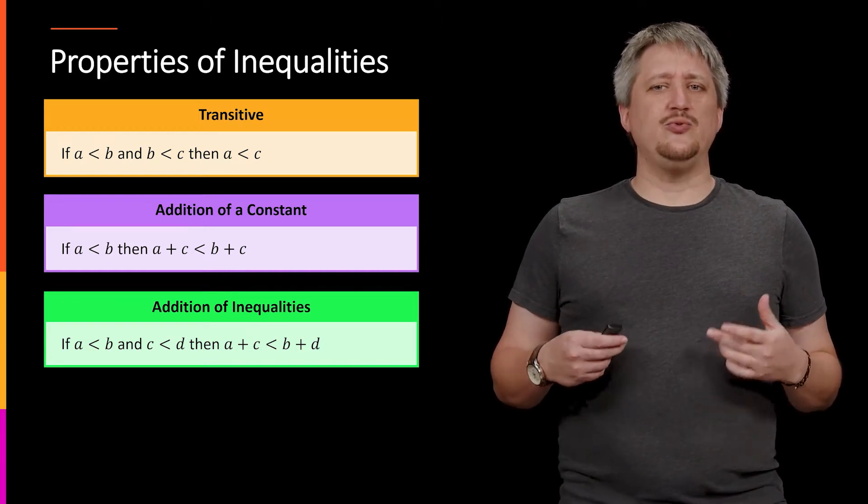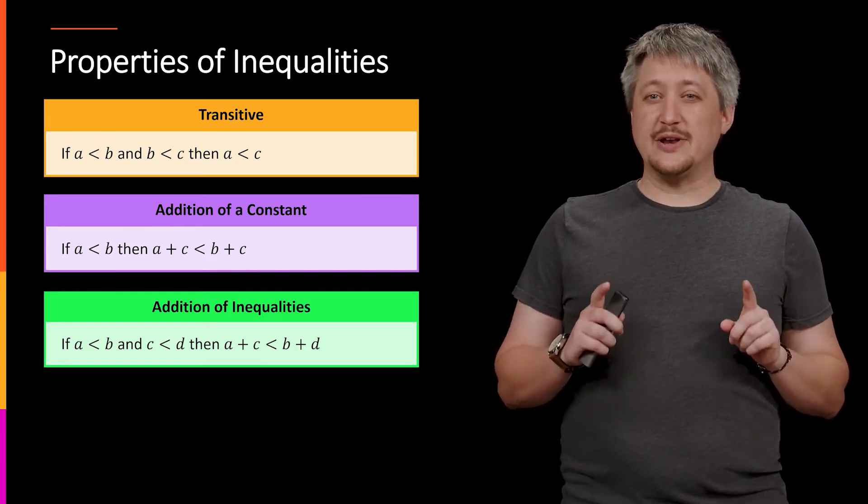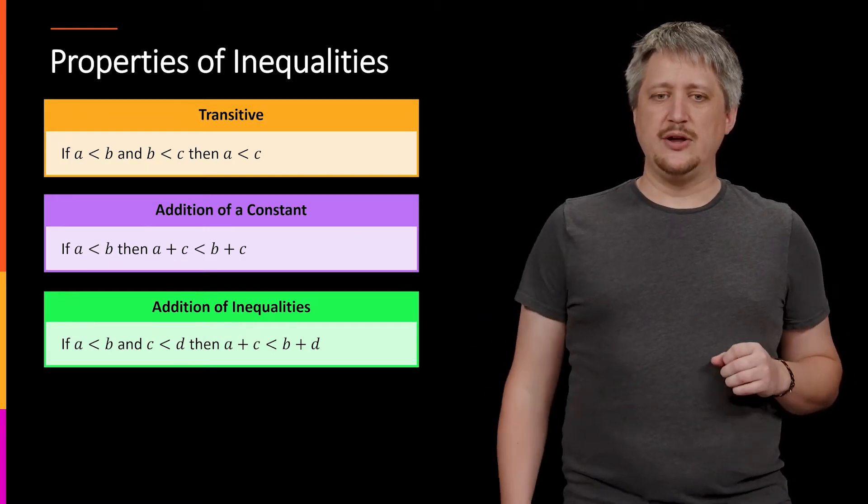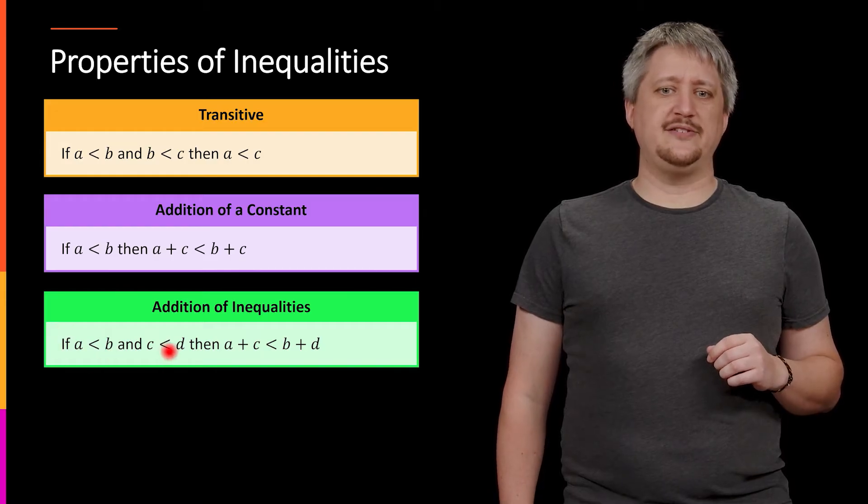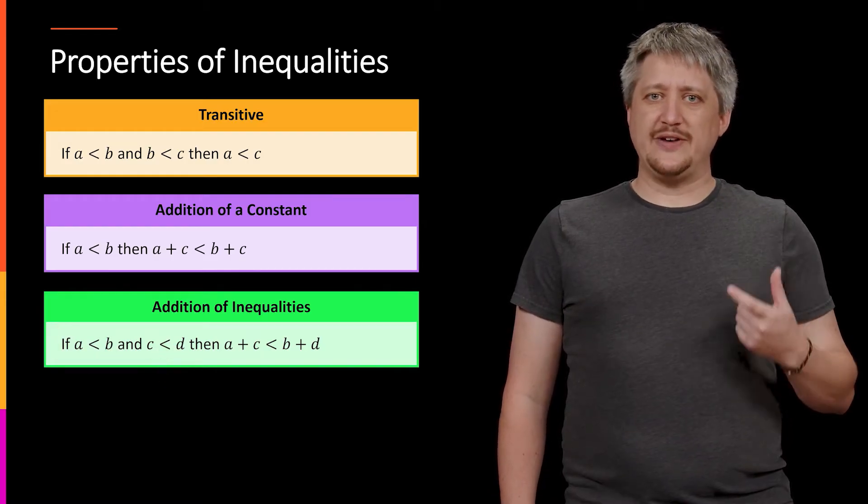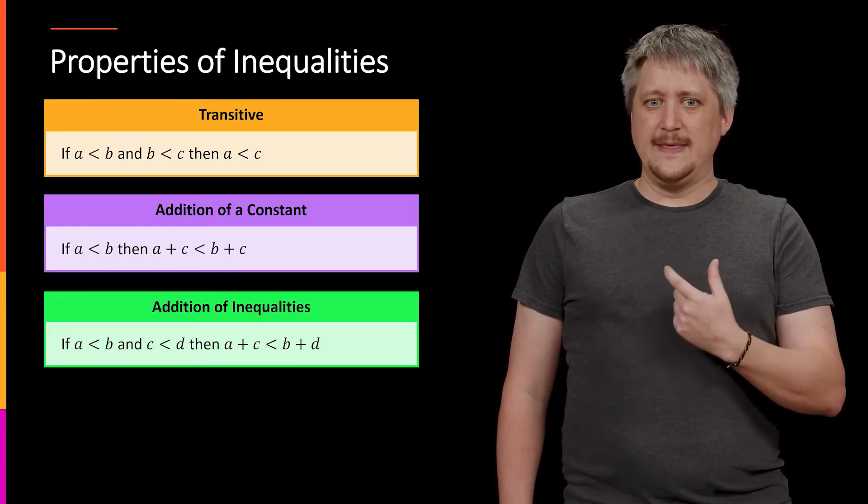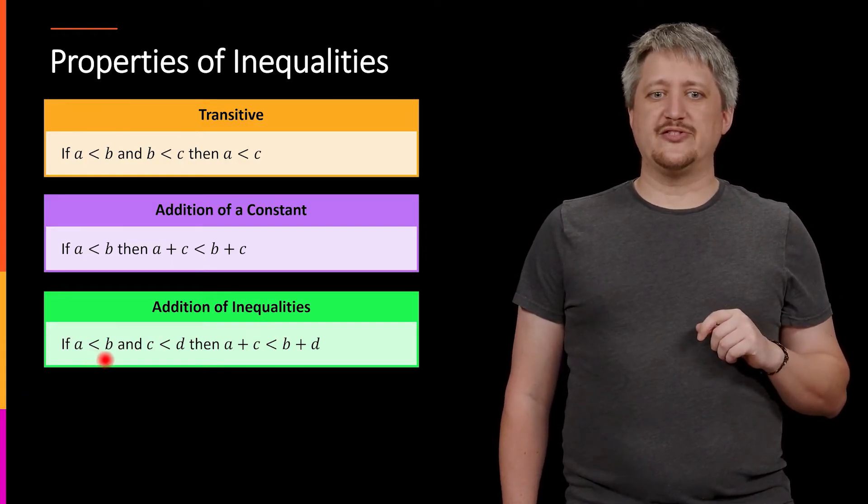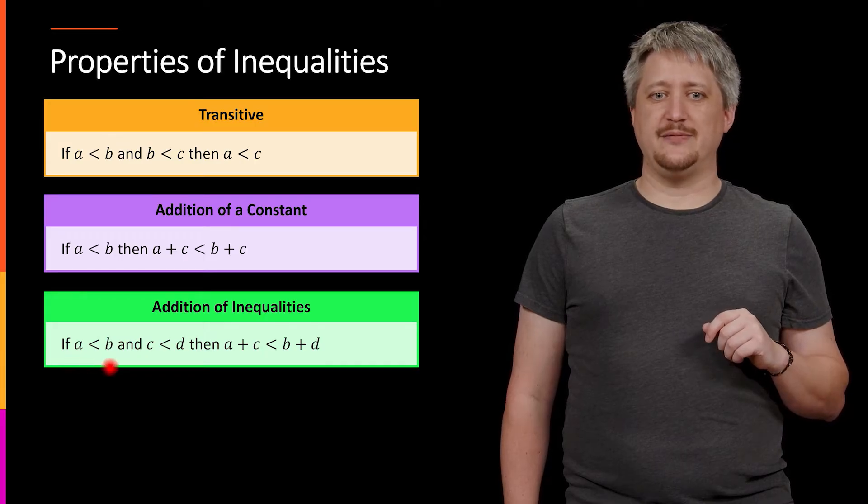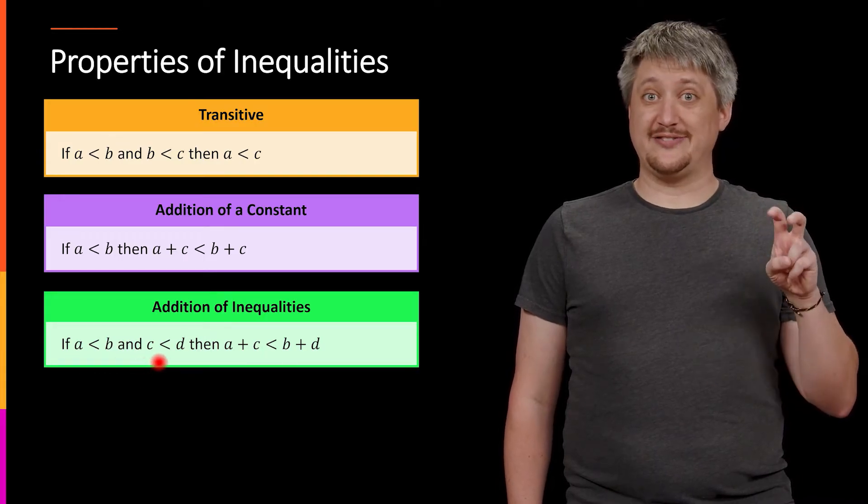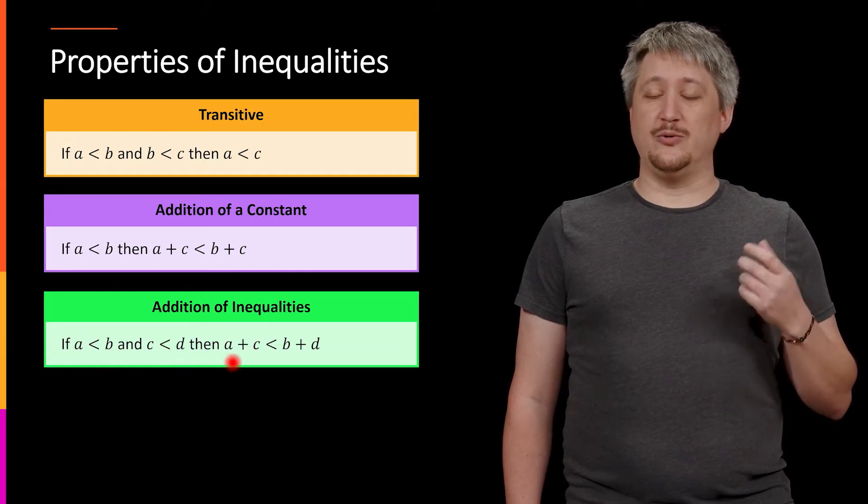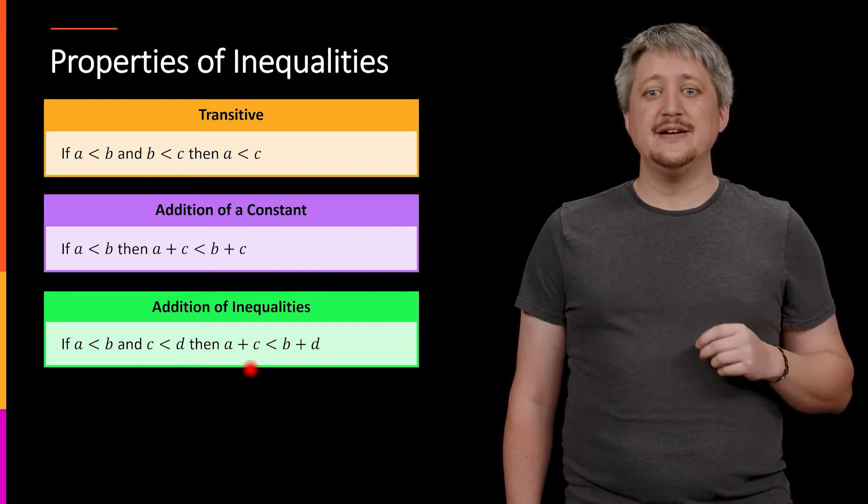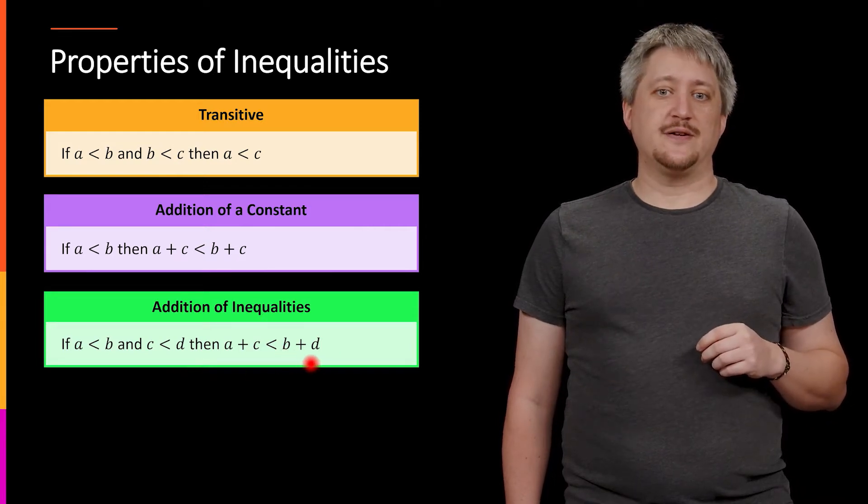You can also add two inequalities together, although this one has a bit of a caveat that you have to make sure you do it very carefully. If you have a less than b and c less than d, then you can add these together, but only so that the sign is going the same way, meaning that whichever one's on the smaller side. A is less than b, c is less than d. A and c are on the less than side. Those are the ones that you can put together. And the b and d, they're on the bigger side. So those are the ones that get put together.